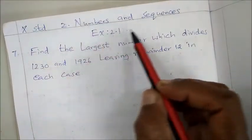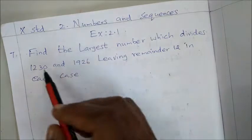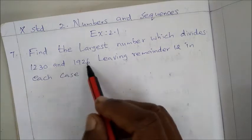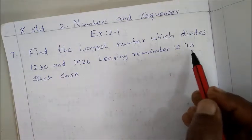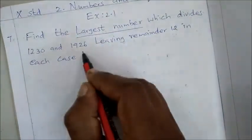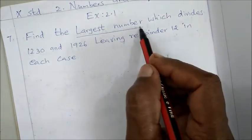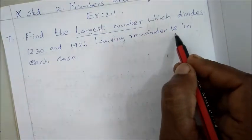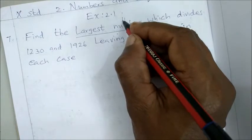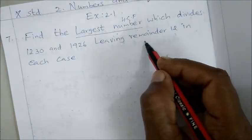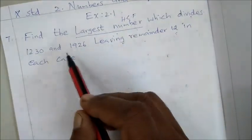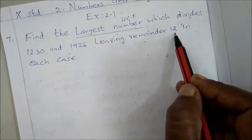This is 10th standard, second unit, Numbers and Sequences, Exercise 2.1, problem 7. Find the largest number which divides 1230 and 1926 leaving remainder 12 in each case. We need to find the largest number, and the condition is leaving remainder 12 in both numbers.